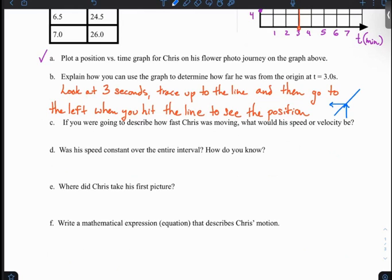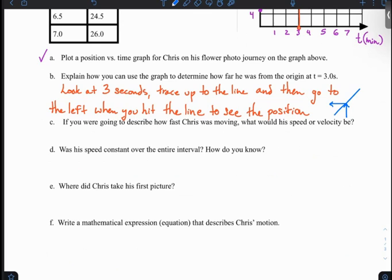If you were going to describe how fast Chris was moving, what would his speed or velocity be? The way you do this is you are going to look at the slope. So the slope is equal to the velocity on a position versus time graph. So to do that, you would just do rise over run.